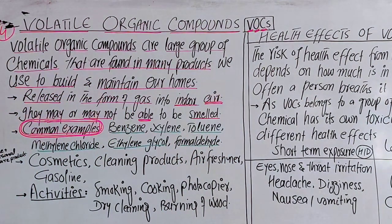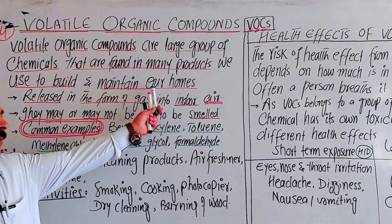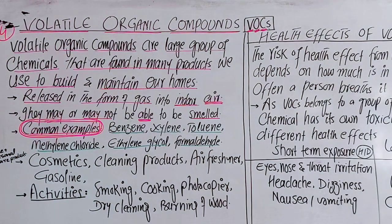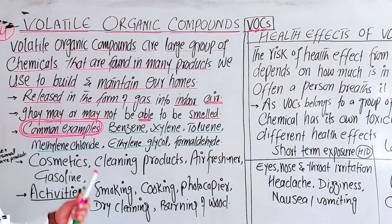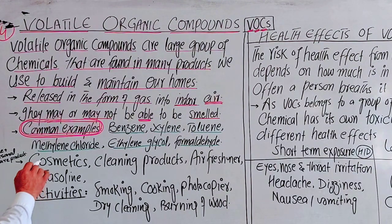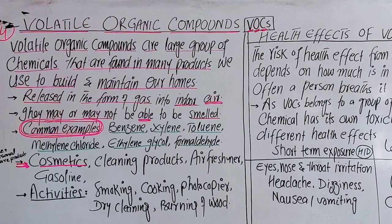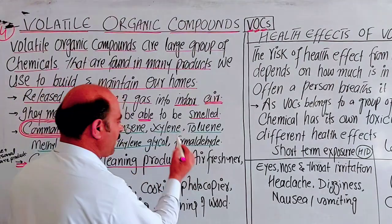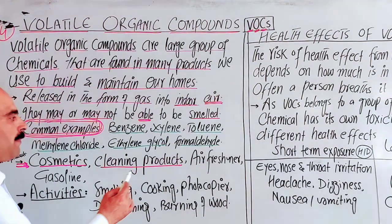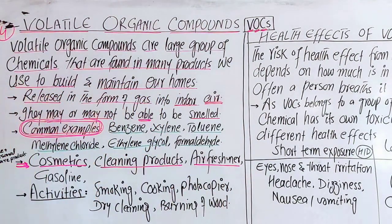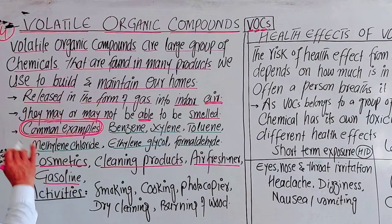In addition to building and maintenance materials, sources of VOCs include personal care and body care products such as cosmetics, cleaning products, washing powder, air fresheners, and other household chemicals. These products all contain organic compounds that are released into the atmosphere.